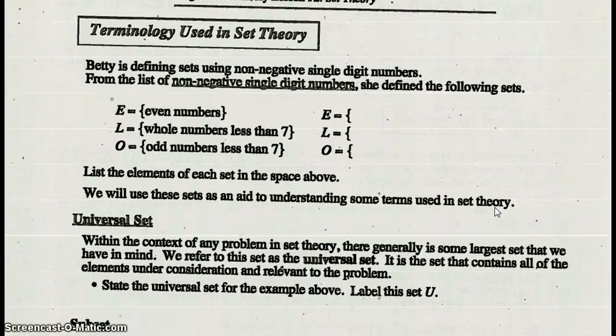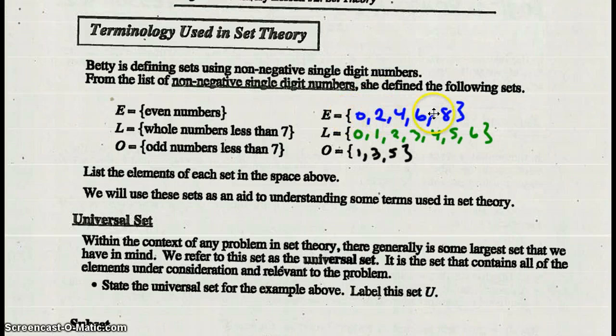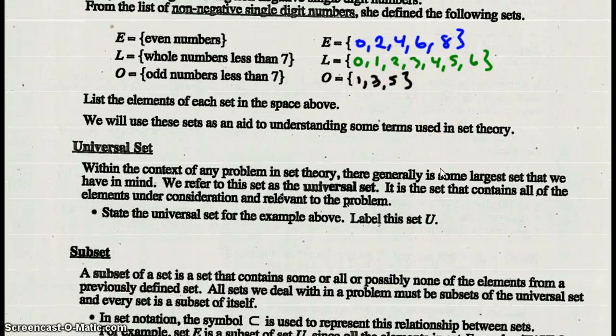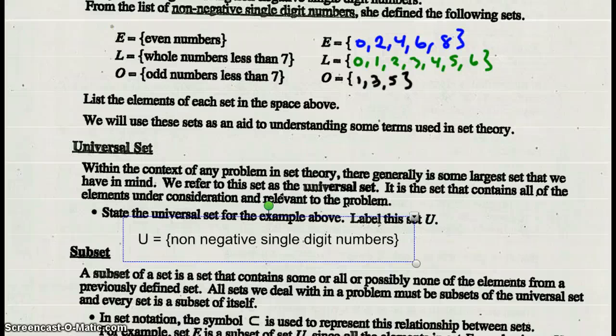Terminology used in set theory. Betty is defining sets using non-negative single-digit numbers. E is the set of even numbers. L is the set of whole numbers less than 7. O is the set of odd numbers less than 7. So set E is the even numbers, single digits. Whole numbers less than 7 is set L. And odd numbers less than 7 is set O. Universal set: within the context of any problem in set theory, there is generally some larger set that we have in mind. It is a set that contains all the elements under consideration and relevant to the problem. So set U would be the non-negative single-digit numbers.